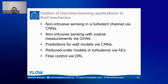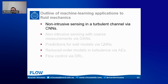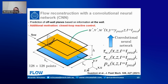Today I will cover various examples where we can apply machine learning to fluid mechanics. I will start by telling you about how we can use machine learning for non-intrusive sensing — being able to measure some part of the flow without having to place a sensor there. We are able to measure at the wall and, based on those measurements, predict what happens above the wall at different locations.